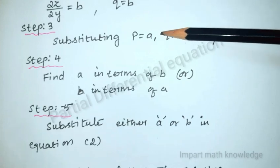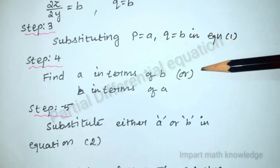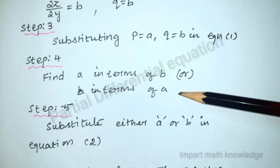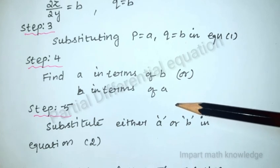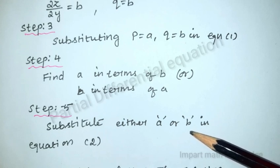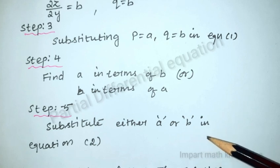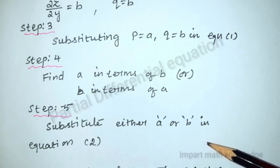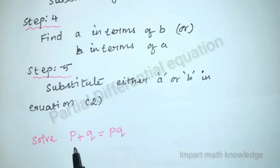Substitute p = a and q = b in the given equation. Once you substitute, find a in terms of b or b in terms of a, then substitute that value back into z = ax + by + c to get the complete solution. The complete solution has an equal number of variables and constants.